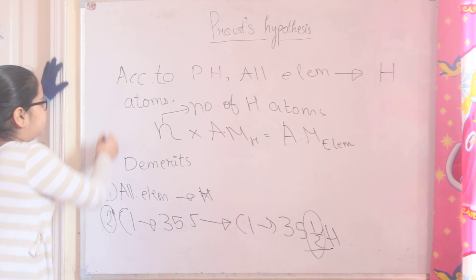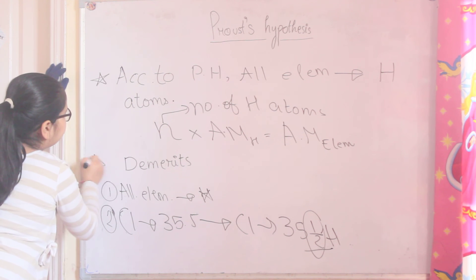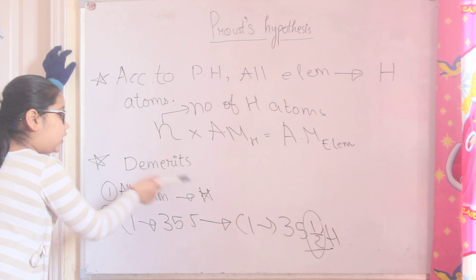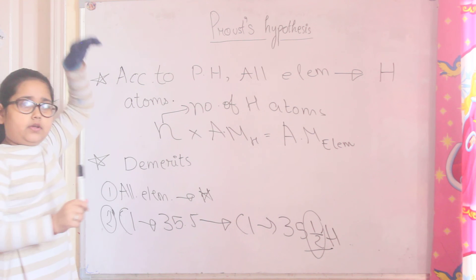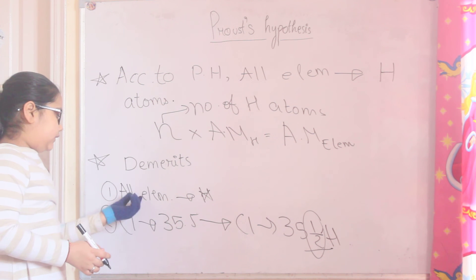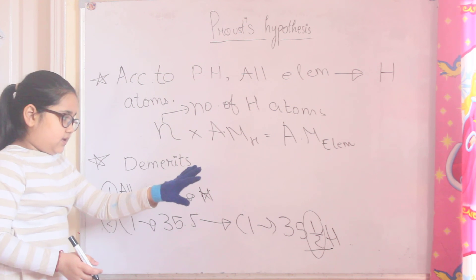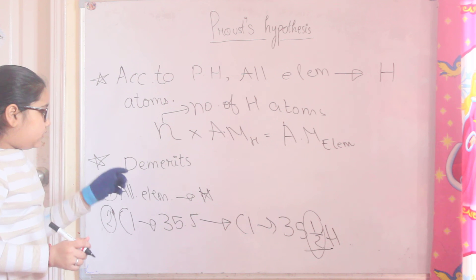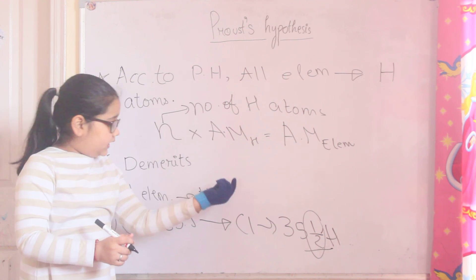And if you ask what are the demerits of Proust's hypothesis, all elements cannot be made up of hydrogen because hydrogen is a different element and others are others. So calcium and hydrogen can be made up of 40 hydrogen because calcium and hydrogen are two different elements.